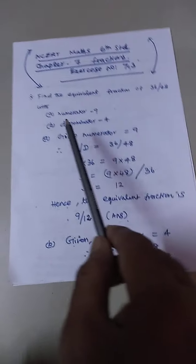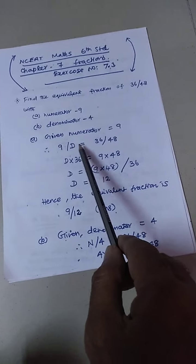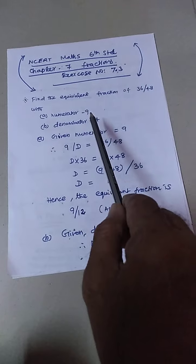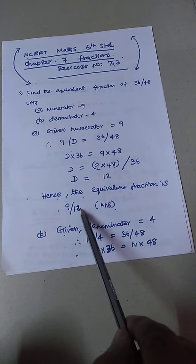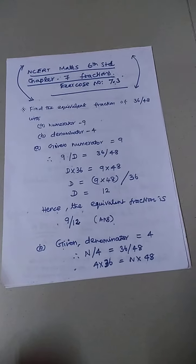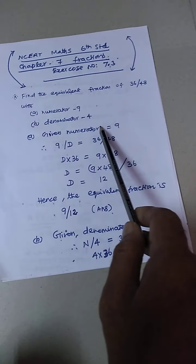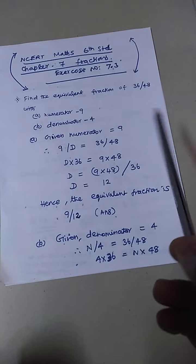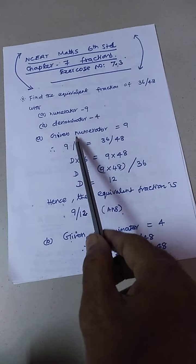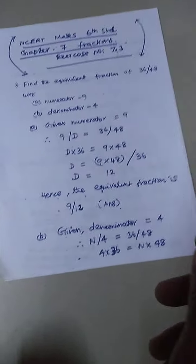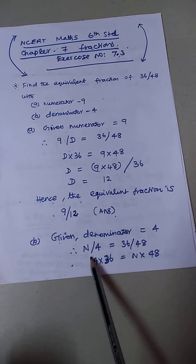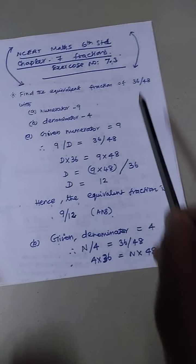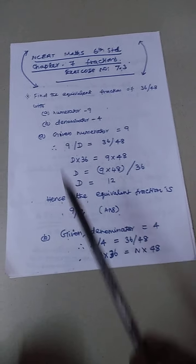Given numerator 9, D (denominator) is found to be 12. So the equivalent fraction with numerator 9 is 9/12, which equals 36/48. For the second part, denominator 4 is given and we need to find numerator N. The equivalent fraction is 36/48.